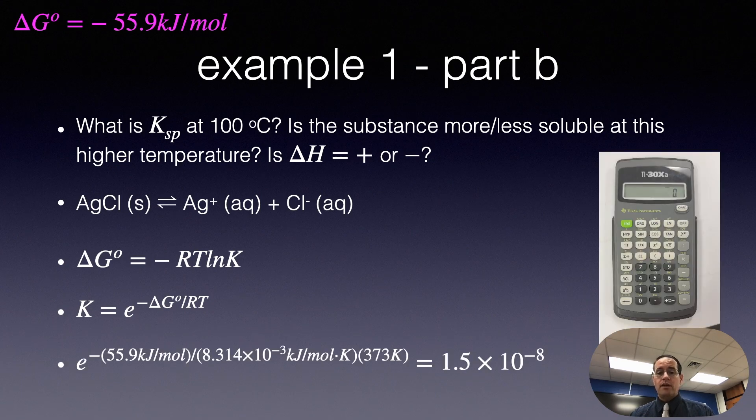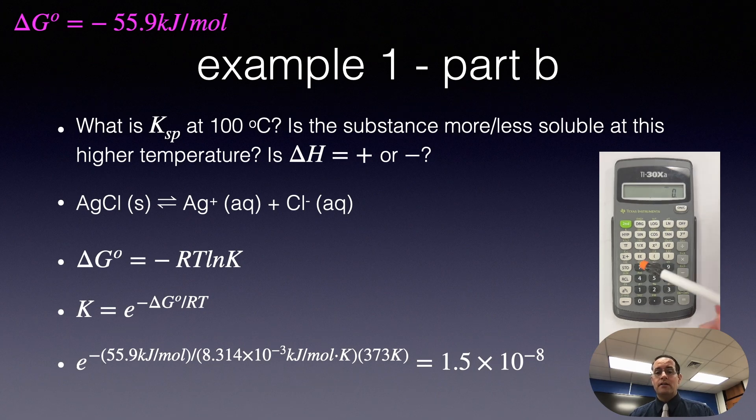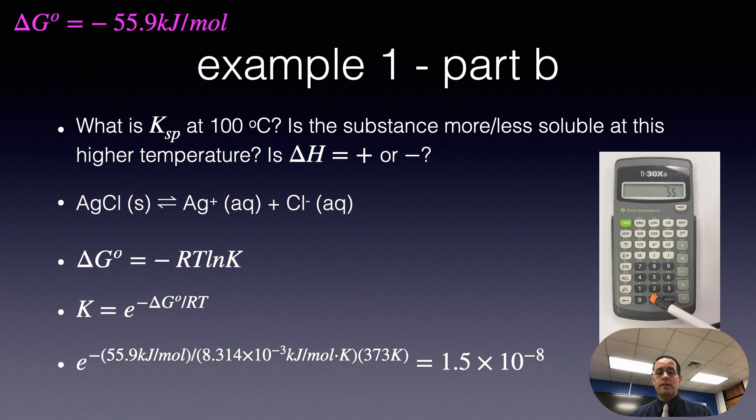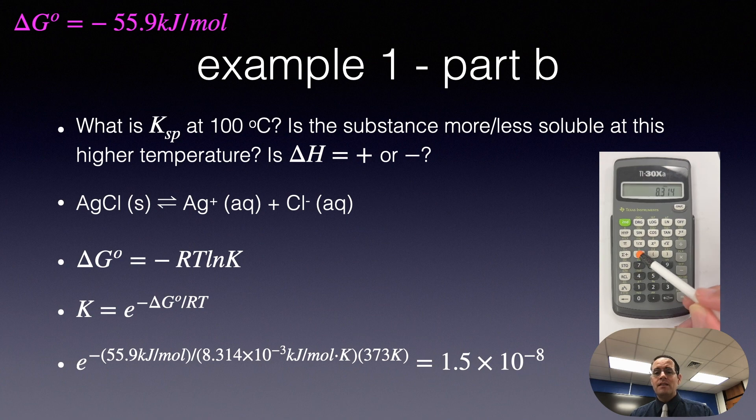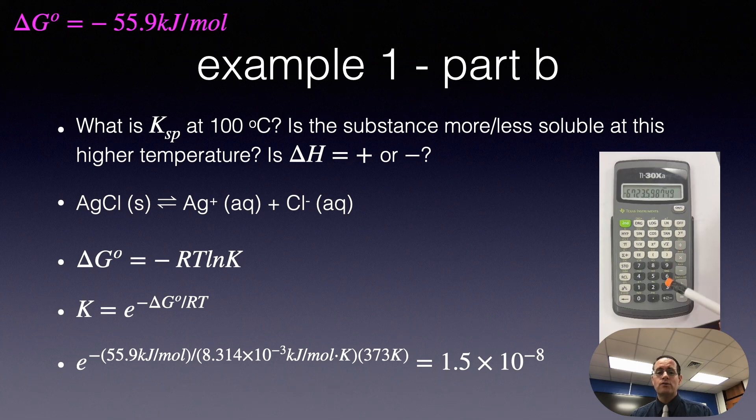And I'm going to go ahead and show you on my calculator how you do that with this one. So you want to type 55.9, hit the plus minus key. You want to divide by 8.314. Hit the EE button, and then type 3 minus. Hit the equal key, or hit the divide key, actually. And then type 373. And then hit equal.